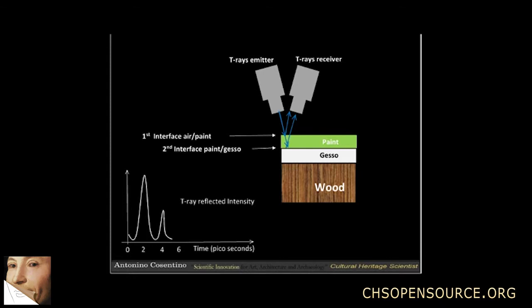Same process again to reach the gesso-wood interface. If the pulse takes one picosecond to travel through the gesso, then the new peak will show up after six picoseconds.